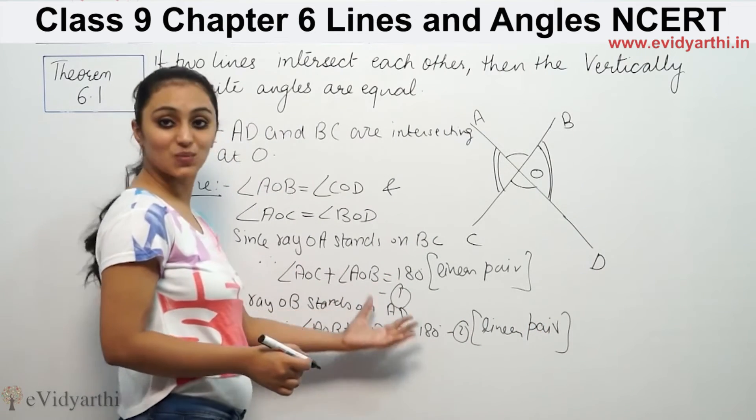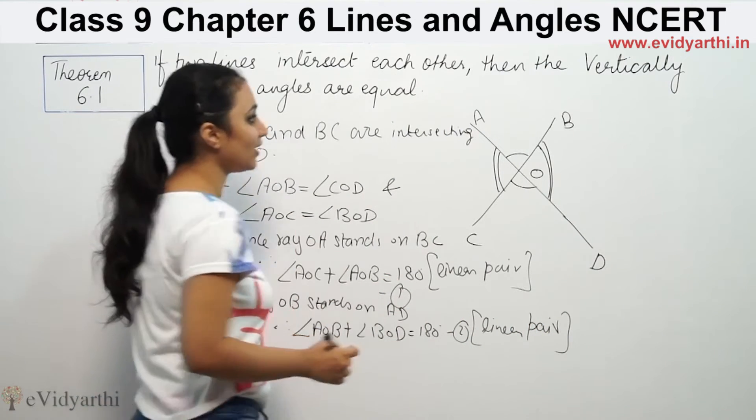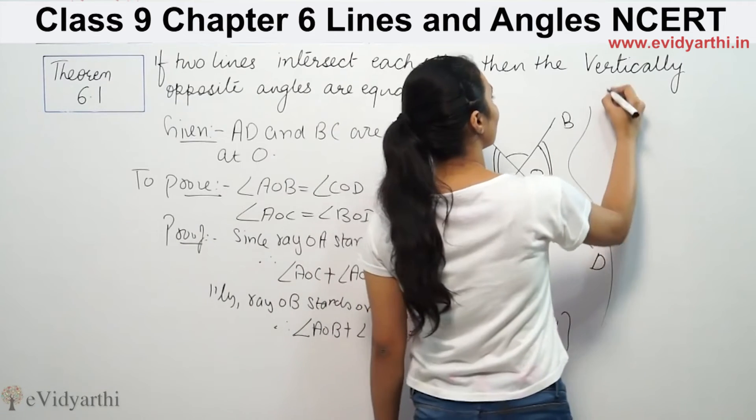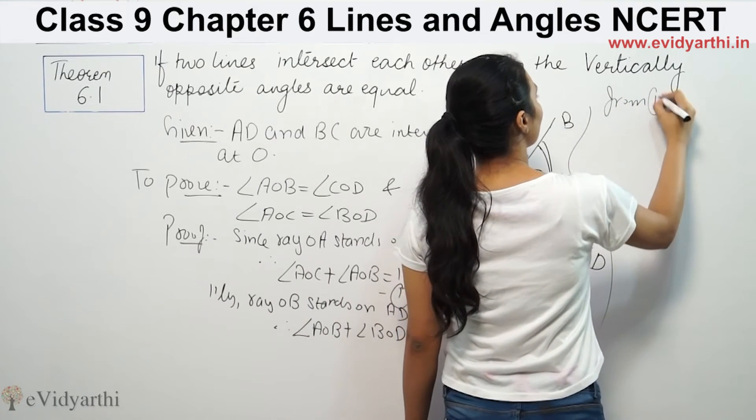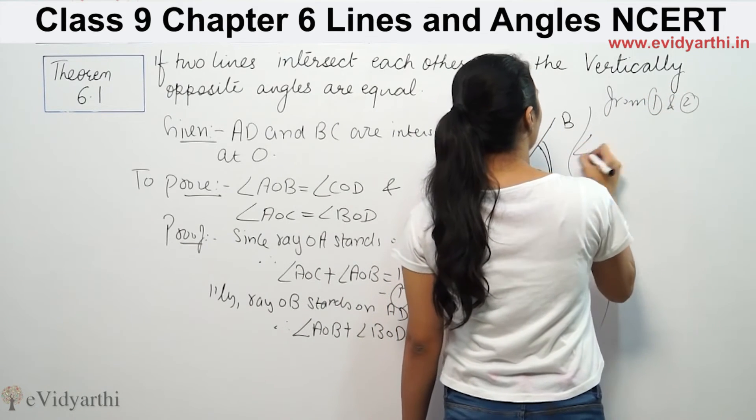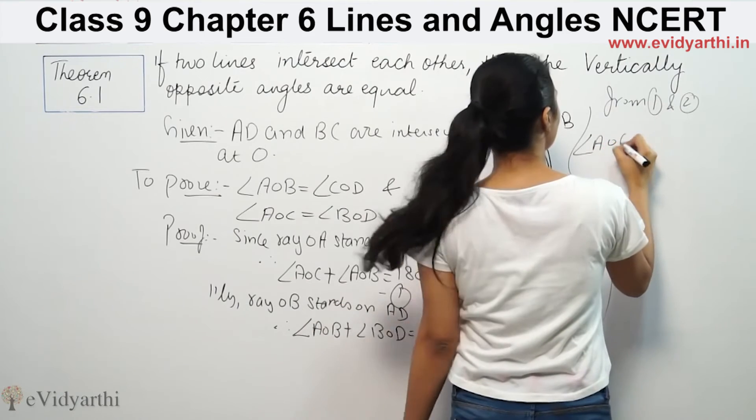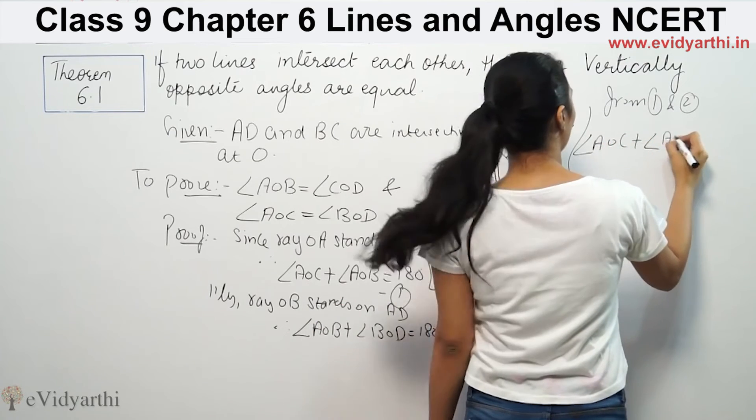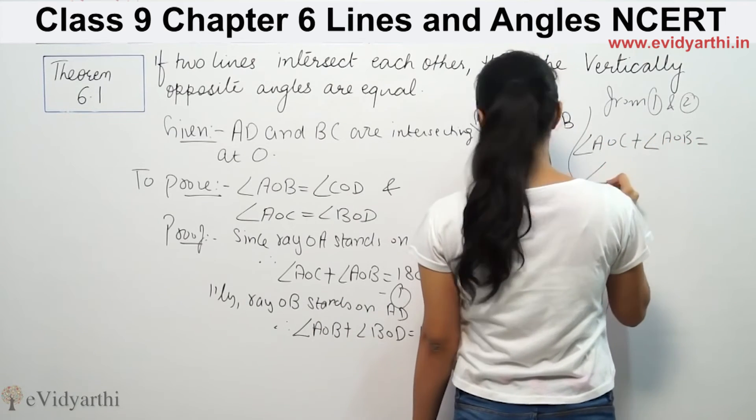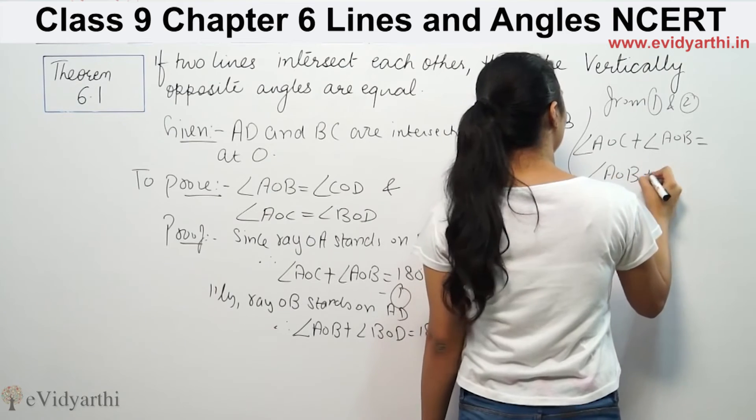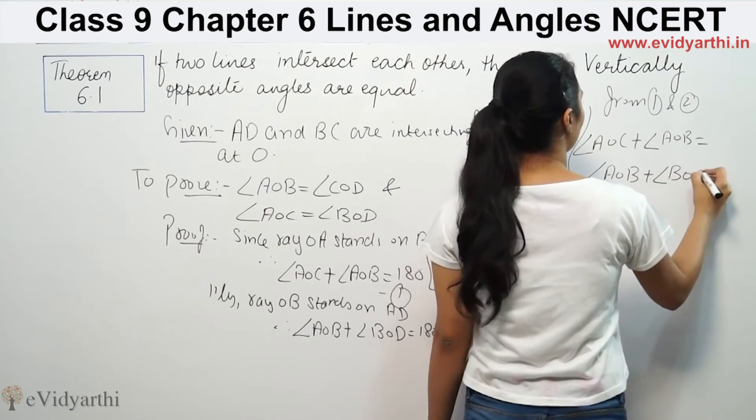Now we add the first and second equations. Angle AOC plus angle AOB equals angle AOB plus angle BOD.